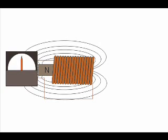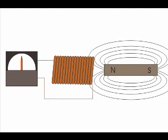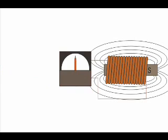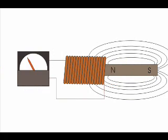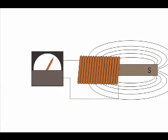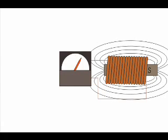When the magnet is moved away from the coil, there is some deflection in the needle but in the opposite direction. Again, when the magnet becomes stationary at that point with respect to the coil, the needle of the galvanometer returns back to zero position. Similarly, if the magnet is held stationary and the coil is moved away and towards the magnet, the galvanometer shows deflection in a similar manner.